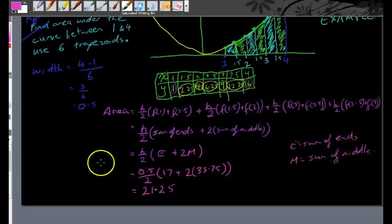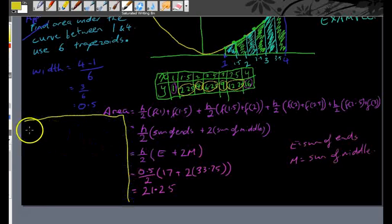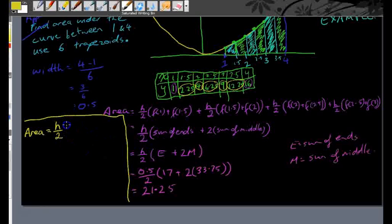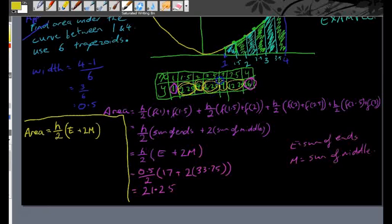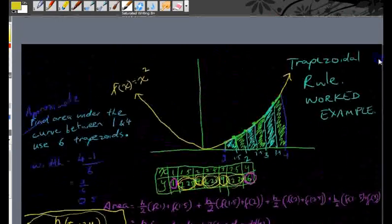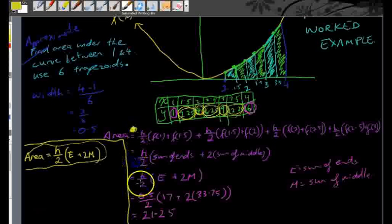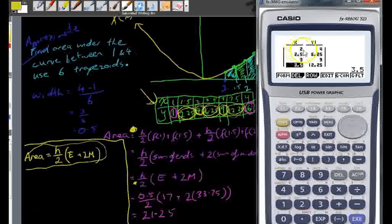Just before we finish up, everything I've explained can be summed up quite succinctly. The approximate area under the curve equals h over 2 times the sum of the end values, plus 2 times the sum of the middle values. The end values are just the first and last; take all the middle values, add them together, multiply by 2. This formula captures everything we've just done, and you use the table function on your calculator to find the values.